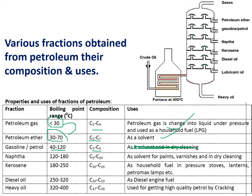Next, naphtha — boiling point 120 to 180 degrees centigrade, composition C9 to C10, used for dry cleaning and as a solvent in paints. Next, kerosene — boiling point 180 to 250 degrees, composition C10 to C16, used for household purposes, luminescence, and fuels for petromax and lanterns. Next, diesel or transport oil — boiling point 250 to 320 degrees, composition C15 to C19.